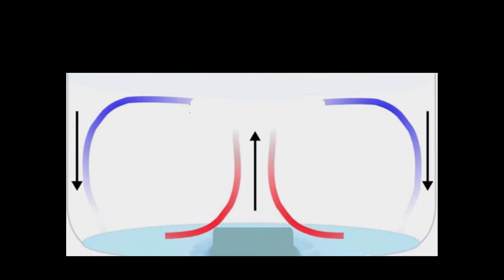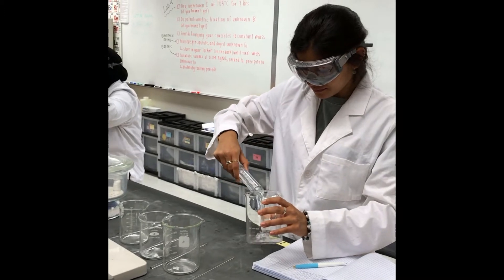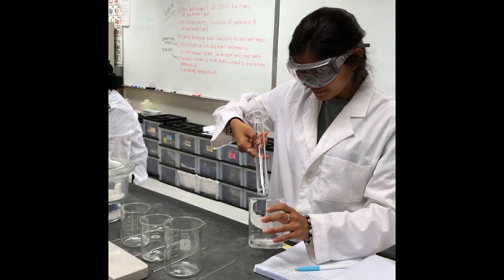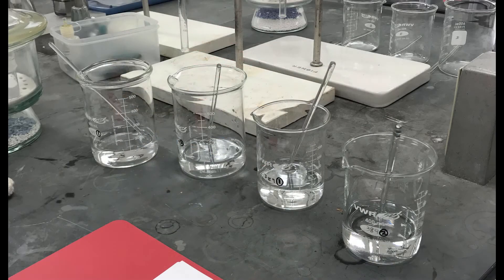Weigh four samples of unknown G into your large beakers, weighing by difference. Dissolve each of your weighed unknown G samples with 100 milliliters of deionized water using a separate stirring rod for each sample.